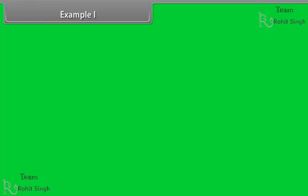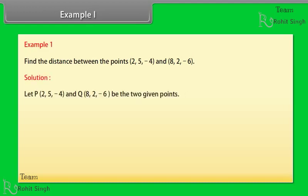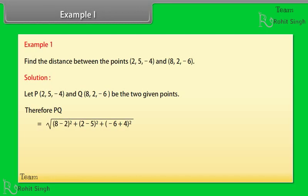Example 1: Find the distance between the points (2, 5, −4) and (8, 2, −6). Solution: PQ = √[(8−2)² + (2−5)² + (−6+4)²] = √[36 + 9 + 4] = √49 = 7.